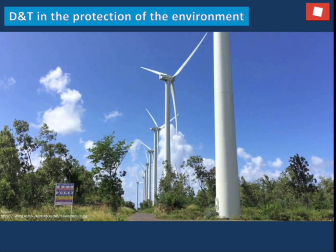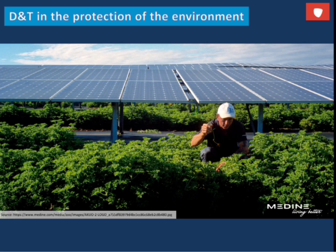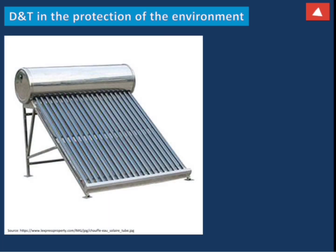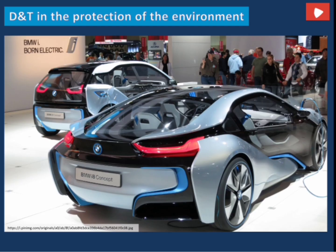Wind turbines use the movement of the wind, called aeolic movement, to produce electricity. Solar panels are also known as photovoltaic cells. Solar water heaters use solar energy to heat water. Electric cars have zero emissions and can be charged to travel.